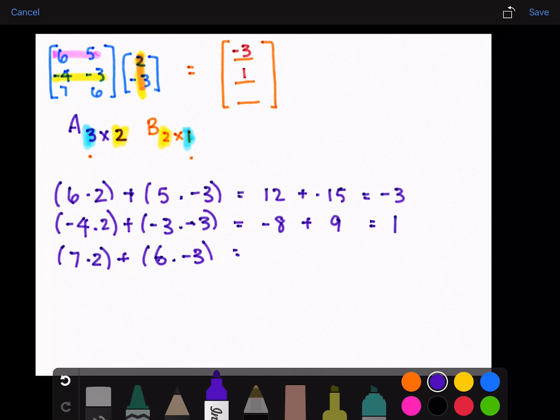which equals 14 minus 18 gives us negative four. So our final element is negative four.